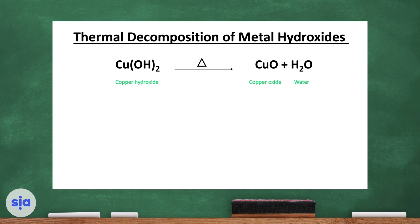If we want to decompose a metal hydroxide by heat, we use copper hydroxide as an example. This is copper hydroxide and its chemical symbol. Notice that this equation is balanced — every equation should be balanced, meaning the number of each element on the left side must equal the number on the right side.